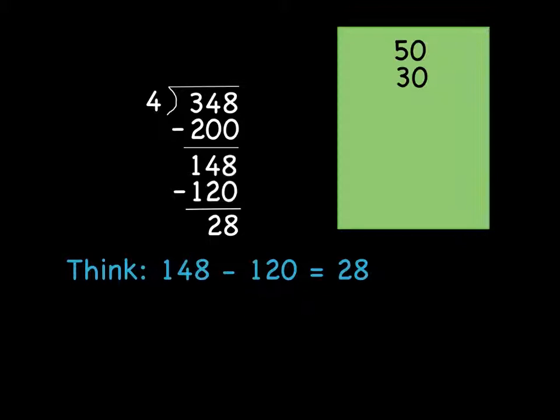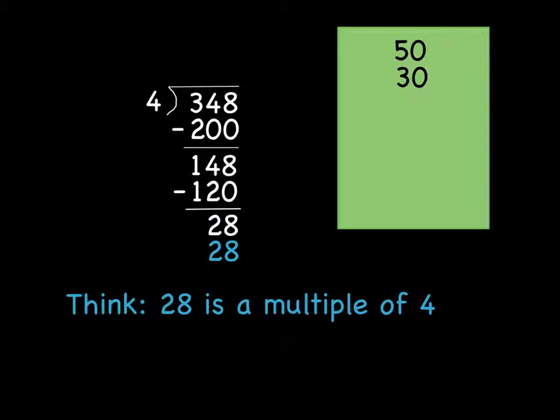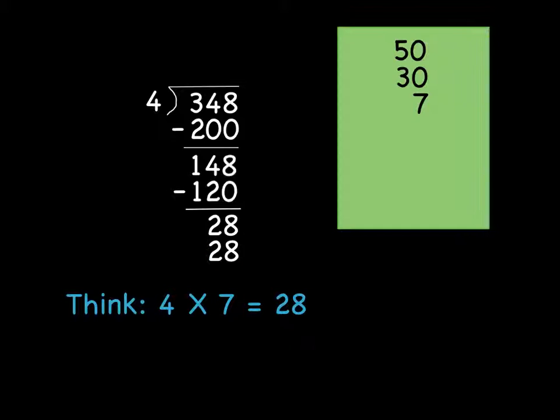Recognize this from last time? Remember last time we did 80, because 50 plus 30 is 80? No problem here. Now we have to think, what is a multiple of 4 that is less than or equal to 28? And you know what? If they come up with 20 again, it would still work. They could write 20 and 5. But for simplicity, I'm going to pretend that we'll find the right answer, which is 28. 28 is a multiple. 4 times what is 4 times 7?